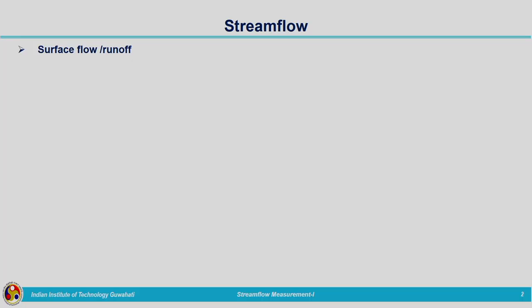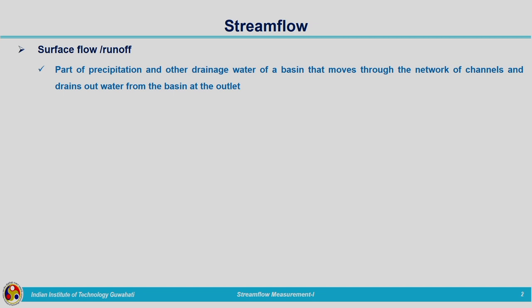The runoff will be contributing to the outlet of the basin. How can it be measured? That is what we are going to see in this lecture. Surface flow or runoff — part of the precipitation and other drainage water of a basin will be moving through the network of channels and drains out water at the basin outlet. The water which is a part of precipitation, some part of precipitation and also other drainage water will be forming the runoff at the outlet of the watershed.